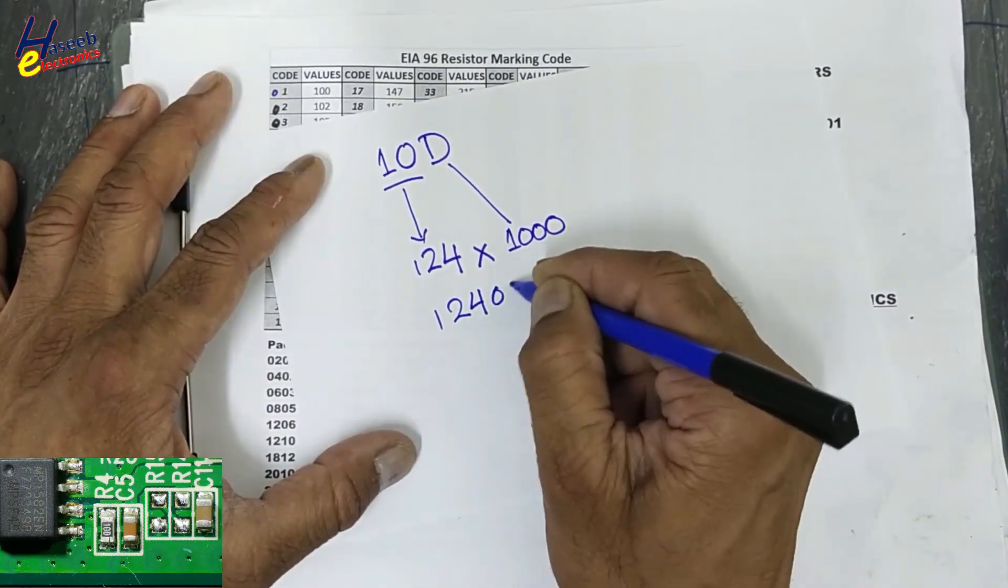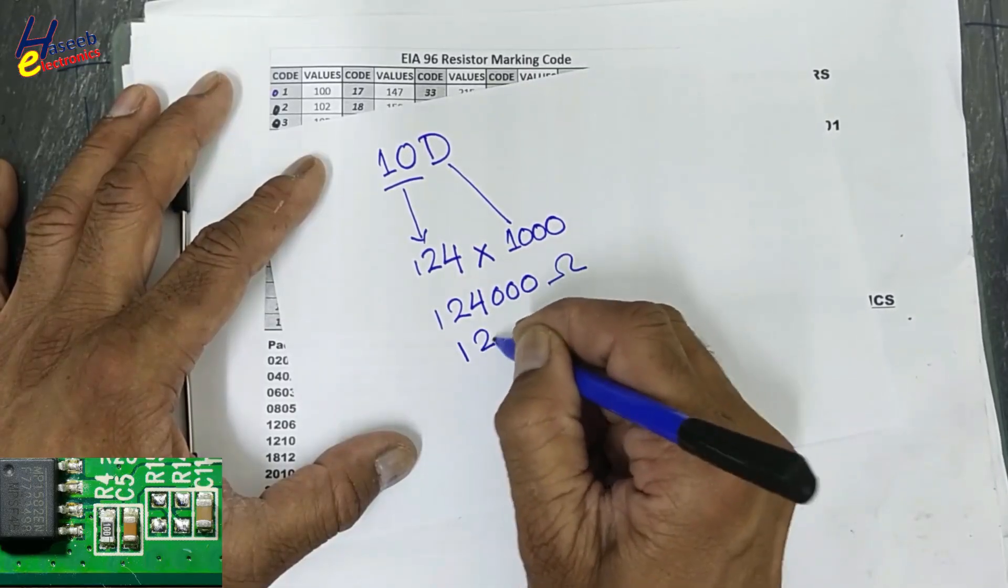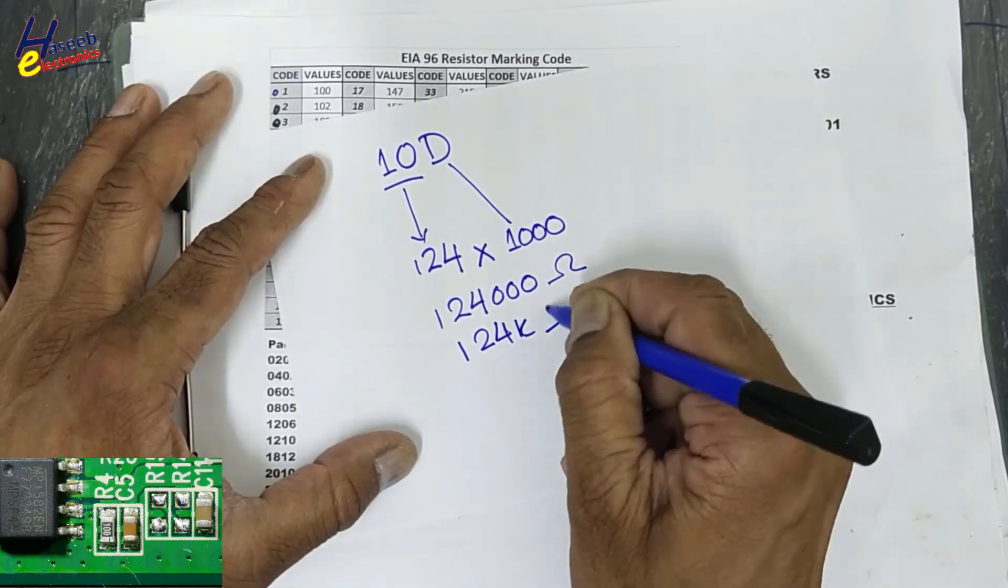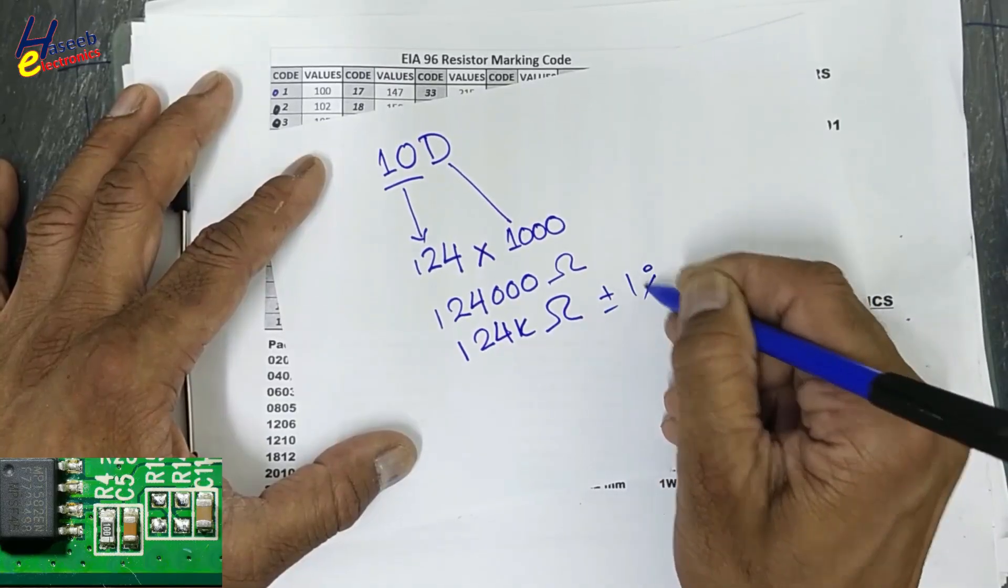124,000 ohms, or 124K, plus minus 1% tolerance.